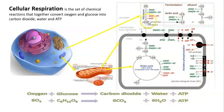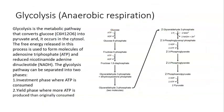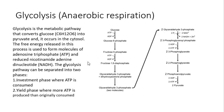The first step is glycolysis, which happens in the cytoplasm. Glycolysis is the metabolic pathway that converts glucose into pyruvate. Through a series of steps, two molecules of pyruvate are produced. The free energy released in this process is used to form ATP and reduce NADH. The glycolysis pathway is separated into two phases: the investment phase, where ATP is consumed, and the yield phase.